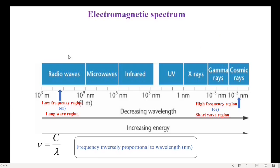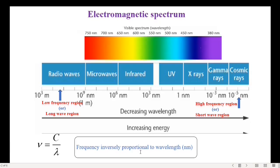It starts from radio waves, then microwaves, then infrared, and this white light portion is called the visible spectrum. White represents the presence of all colors. It consists only the colors sensible to our eyes, that is why it is called the visible spectrum.